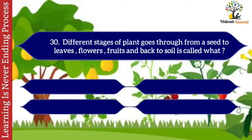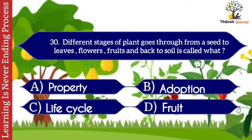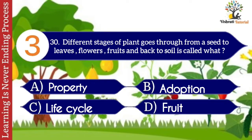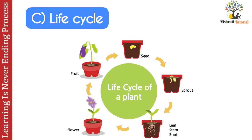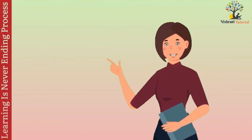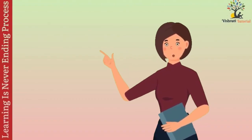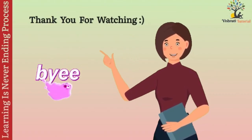Question number thirty: the different stages a plant goes through from seed to leaves, flowers, fruits, and back to soil — is called what? Options: A. Property, B. Adoption, C. Lifecycle, D. Fruit. The correct answer is C. Lifecycle. The different stages a plant goes through from seed to leaves, flowers, fruits and back to seed is called the life cycle of a plant. I hope you all understood the quiz on plants. In the next video I will come up with an interesting topic. Till then, thank you. Bye-bye.